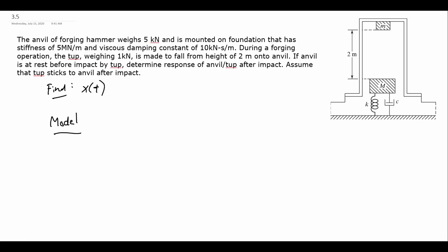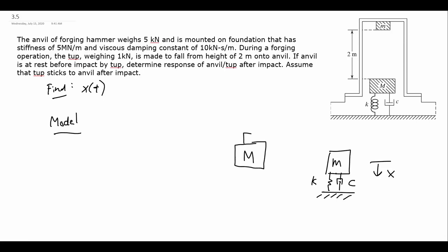We are going to assume that the anvil and the top can only move in the vertical direction. There's not going to be horizontal motion or twisting. So our final model is going to be a mass on a spring and a damper — a simple spring-mass-damper system. The m, k, and c are going to be the equivalent values once we simplify our system. The system is only going to oscillate after the top impacts and sticks to the anvil.